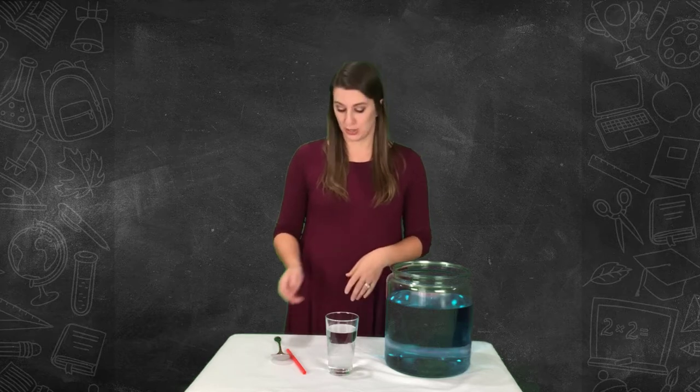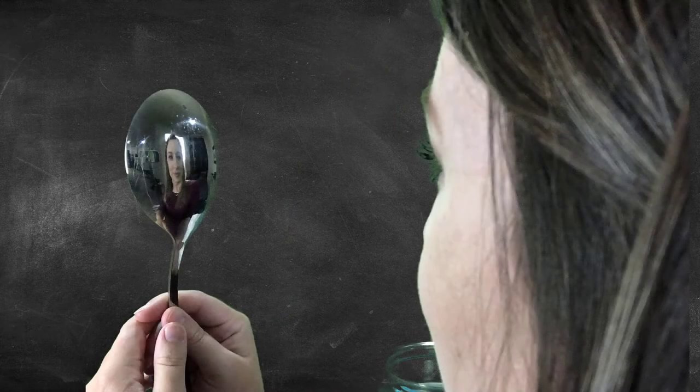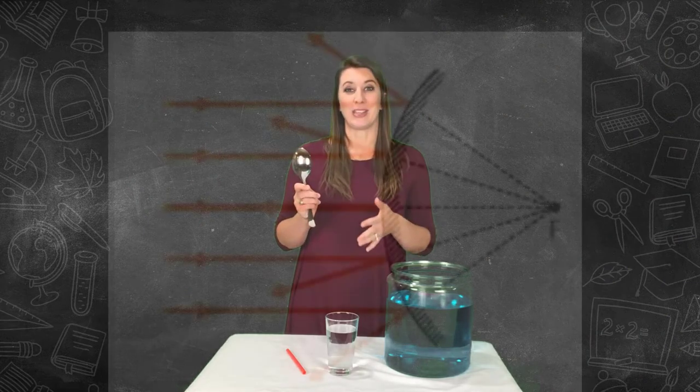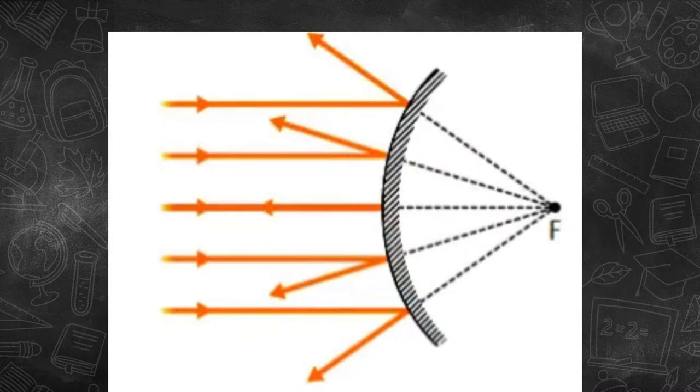Give each of your students a shiny metal spoon and ask them to look at the back or convex side. They will see their face looking back at them as the light is being reflected back at them. Their faces may look a little different though, perhaps more stretched out. That is because the light is bouncing off at angles.